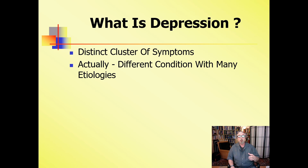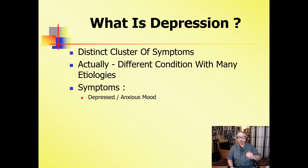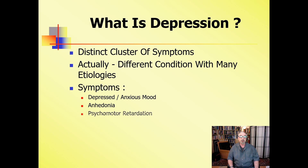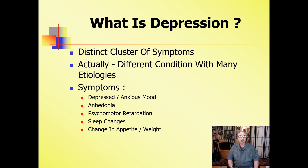So what are the symptoms that tell us someone has depression? Depressed or anxious mood — consistent symptoms that people have all day, most days, for extended periods of time. Anhedonia: diminished capacity to experience pleasure. Psychomotor retardation — feeling very slowed down, mentally slowed down, typically obvious to other people. Sleep changes: increased or decreased sleep. Changes in appetite and weight. And depressogenic thinking, which is pretty characteristic for depression.